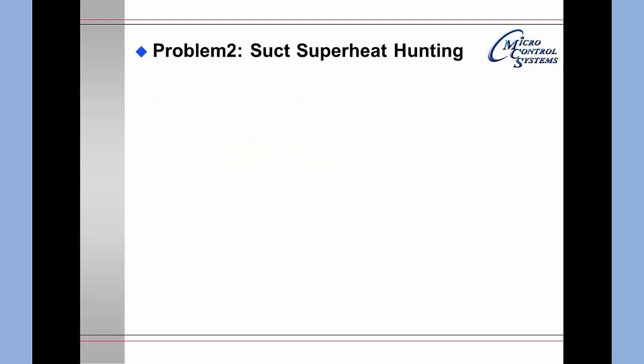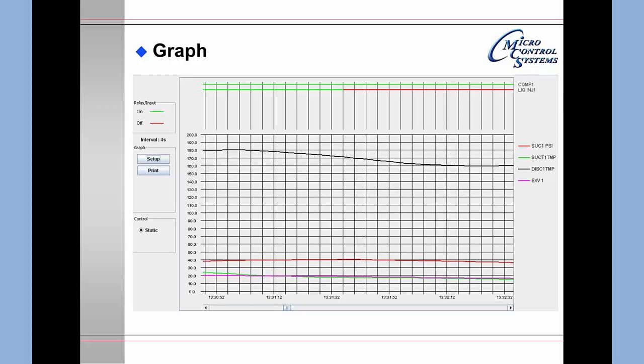The next problem is that our suction superheat was hunting. We have a graph showing the interaction of data that helps us analyze what the problem was. Looking at this graph, you can see that the compressor is on and the liquid injection is on and then the liquid injection goes off. During the time frame that the liquid injection is on you will notice that we are at about 180 degrees.